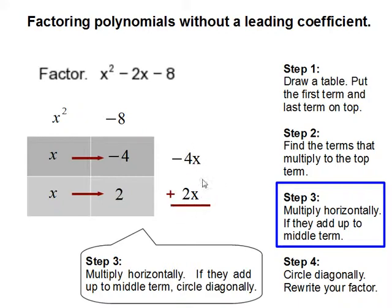Then we're going to add them. And that gets us negative 2x. So as long as this result matches with the middle term, then that means we have the correct numbers.